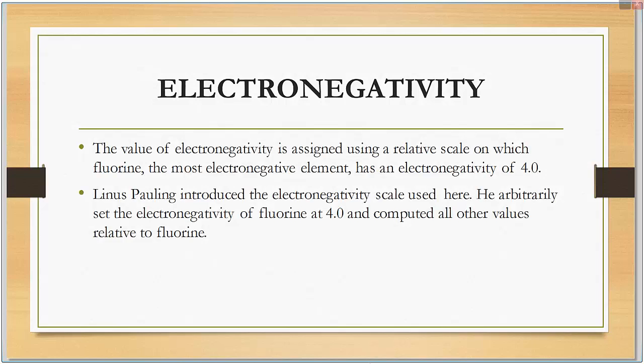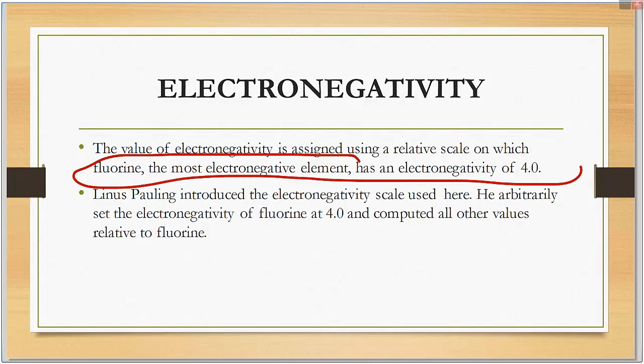The value of electronegativity is assigned using a relative scale on which fluorine, the most electronegative element, has the electronegativity of 4. Linus Pauling introduced the electronegativity scale used here. He arbitrarily set the electronegativity of fluorine to 4 and computed all the other values in comparison to that.